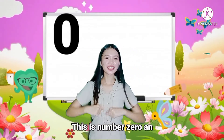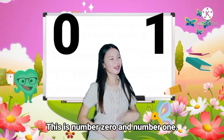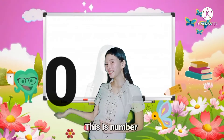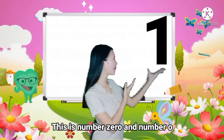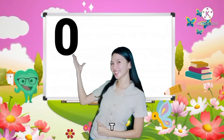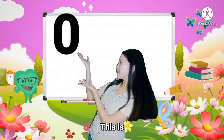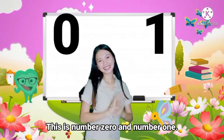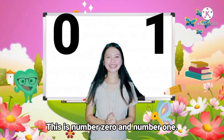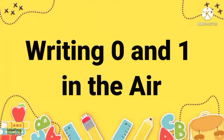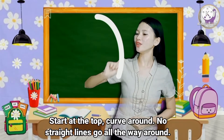This is number zero, we're number one. This is number zero, we're number one, this is number zero, we're number one. This is number zero, we're number one, this is number two, this is number one, this is number zero, we're number one, this is number zero, we're number one, this is number zero, we're number one, this is number zero, we're number one. Corp around.